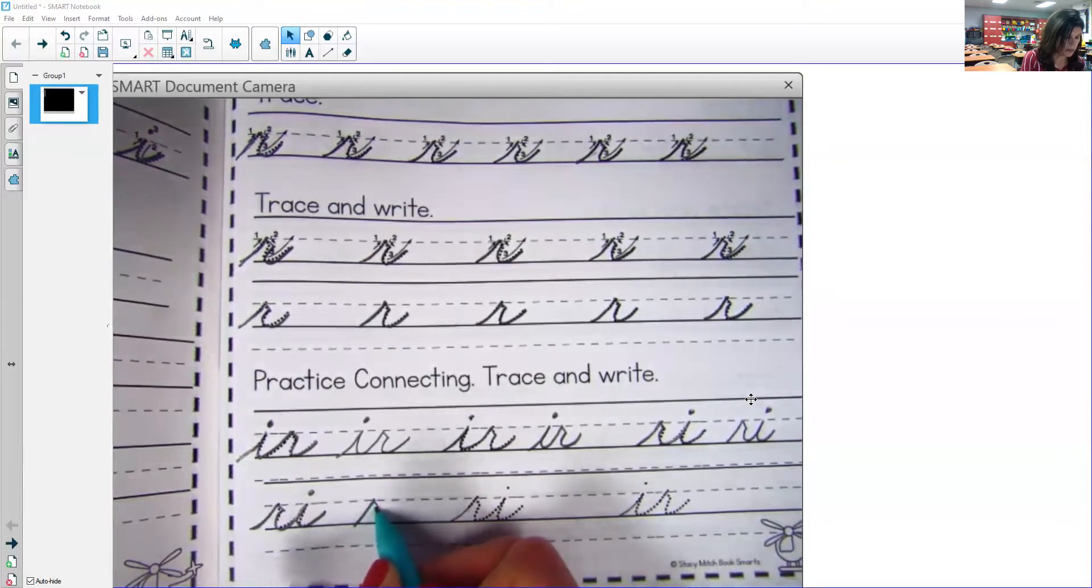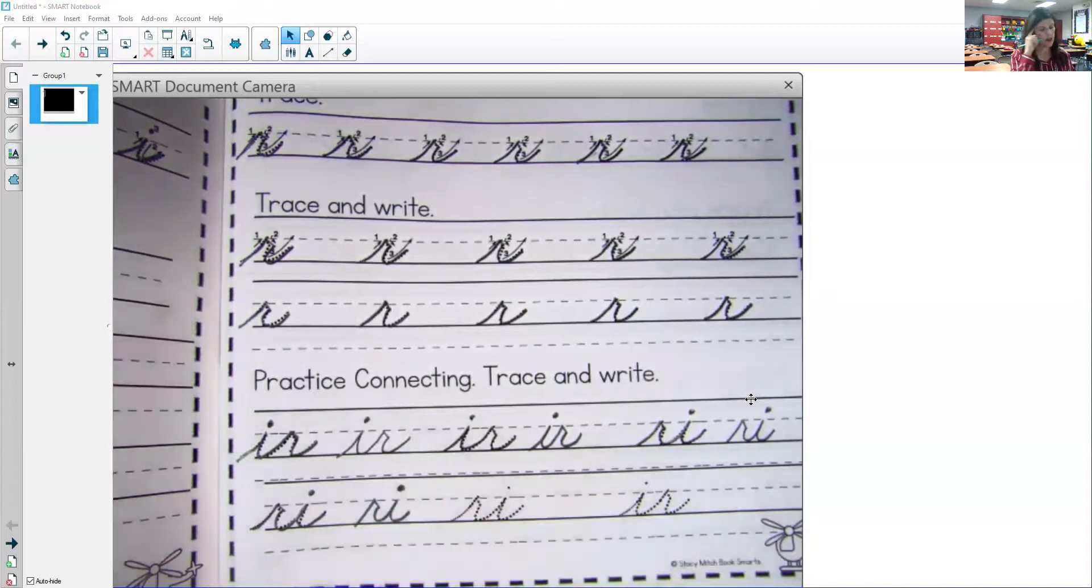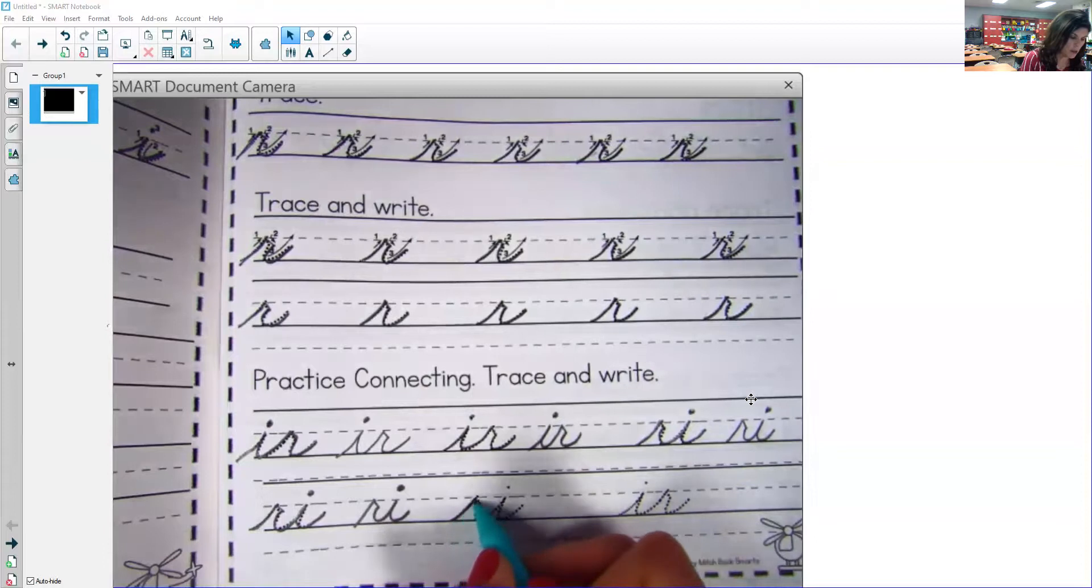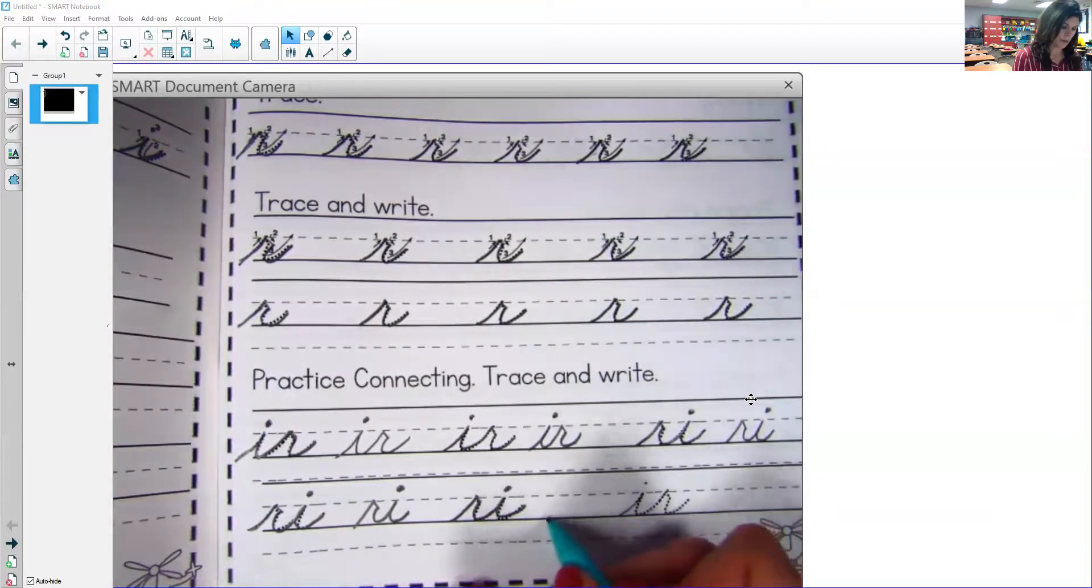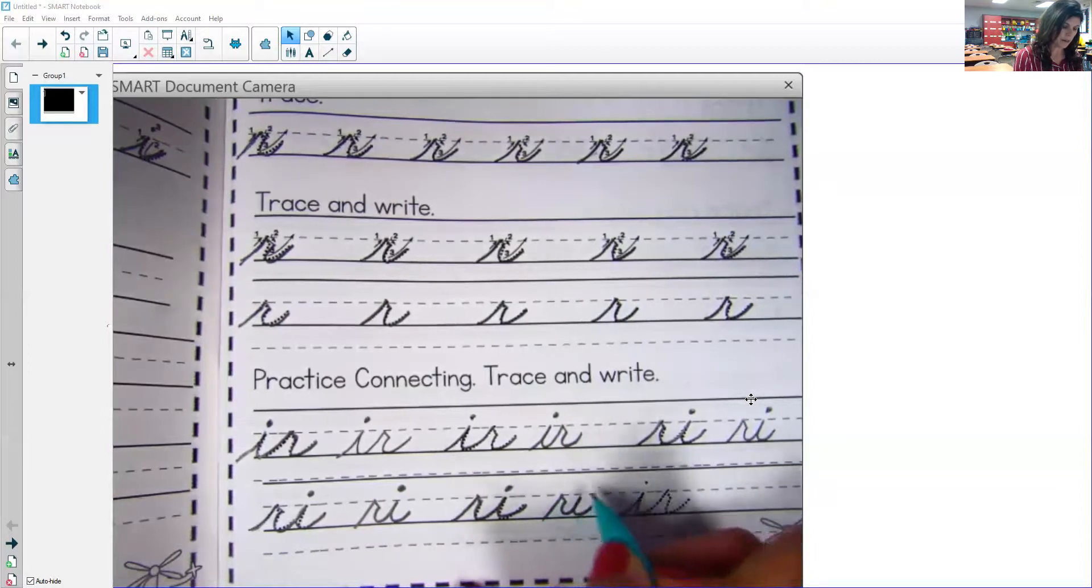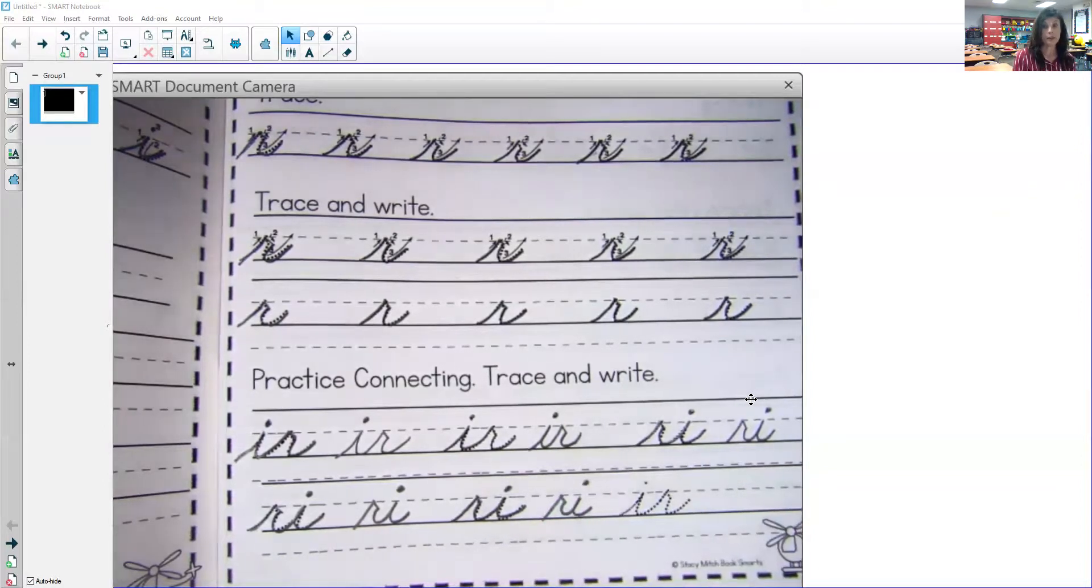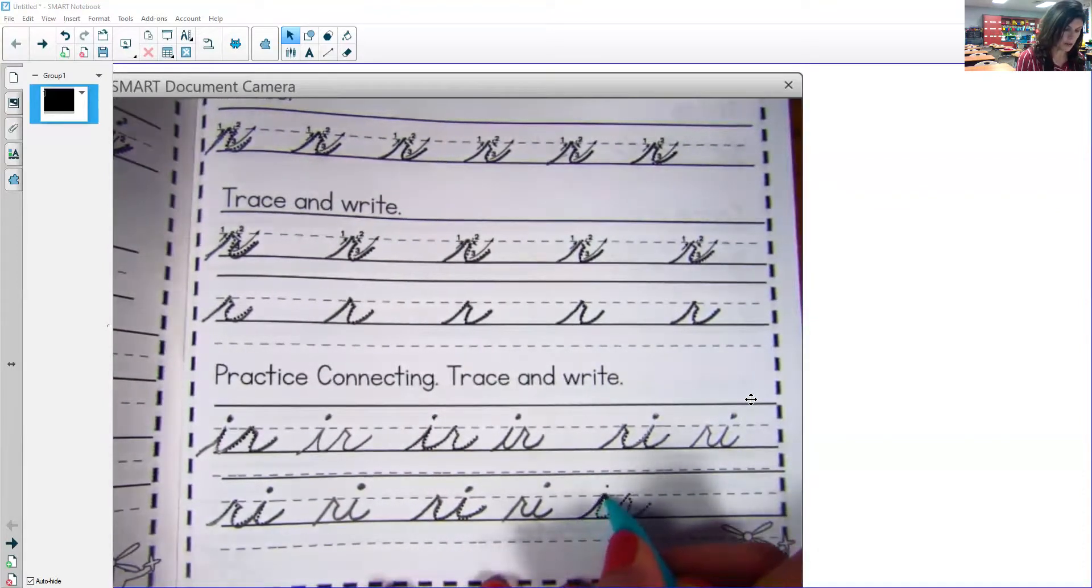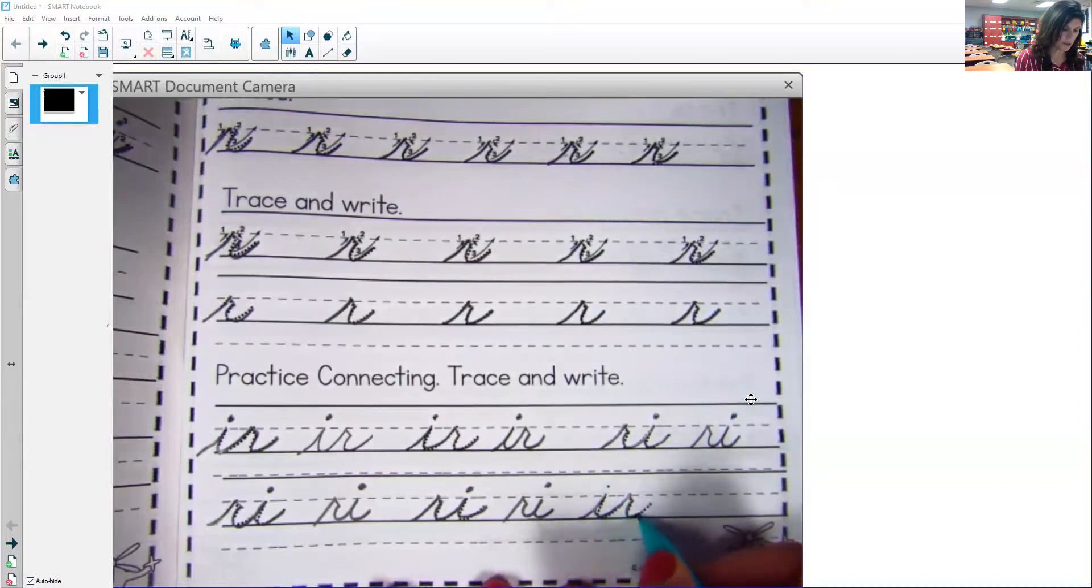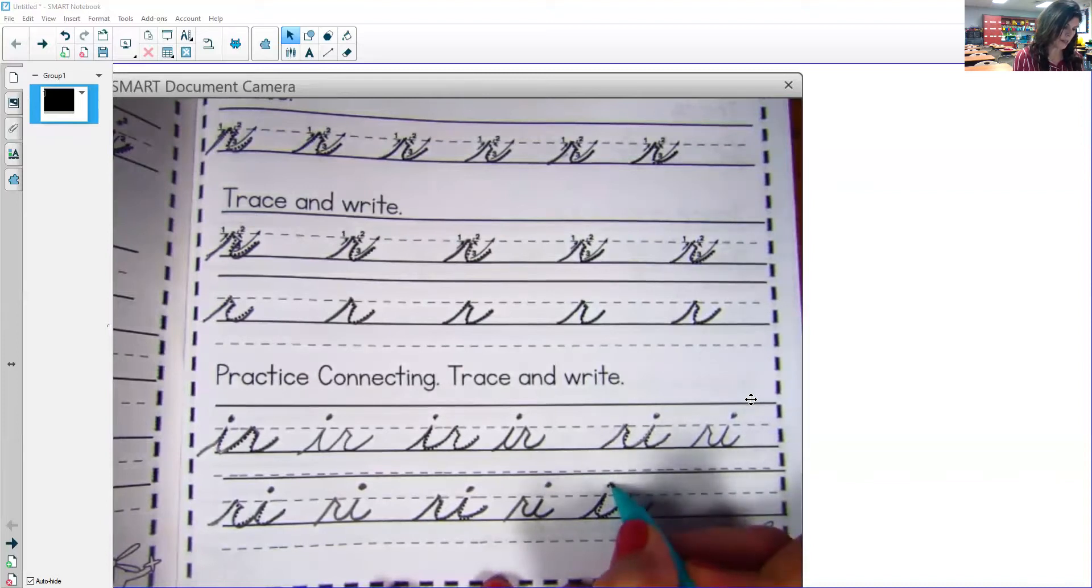R, slant, come down into your I, scoop back up, dot your I. All right, let's try R I one more time. Okay, and now they switched it on us again, so now we want I up to your middle line, come down into your R, R, slant, scoop back up like a helicopter, and dot your I.